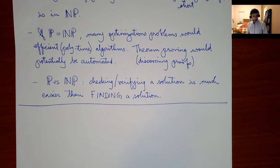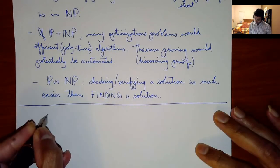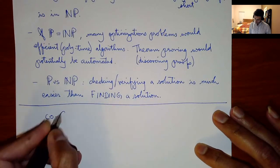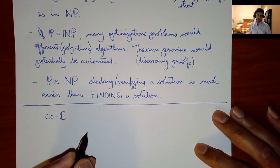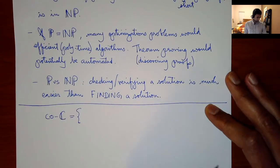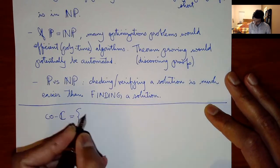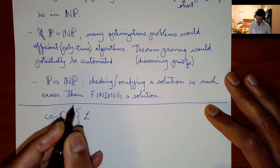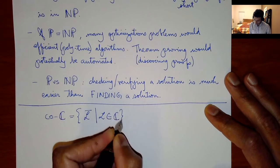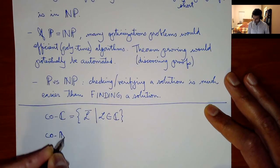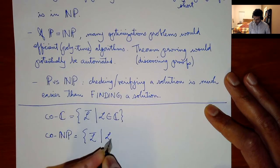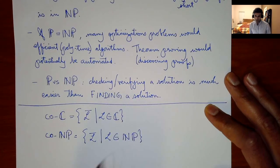The first most important place to look is what are called co-classes, or complement classes. If C is a class of languages, then co-C is simply all the complements of languages L such that L is in C. So for example, co-NP is all languages L-complement such that L is in NP.